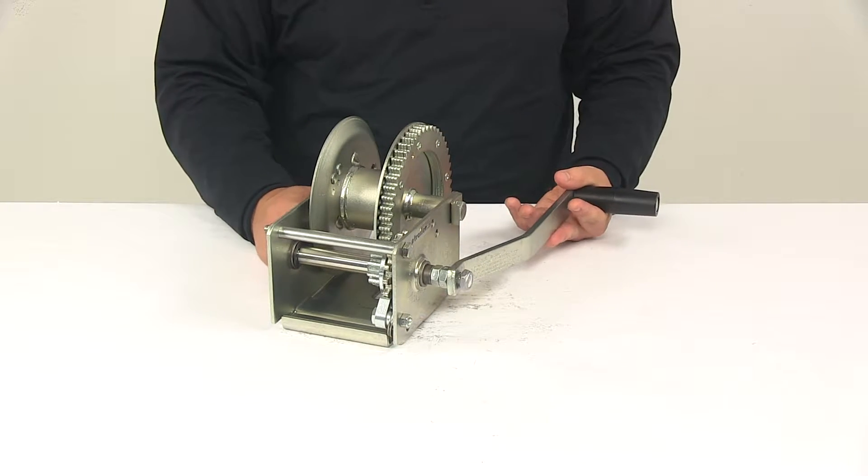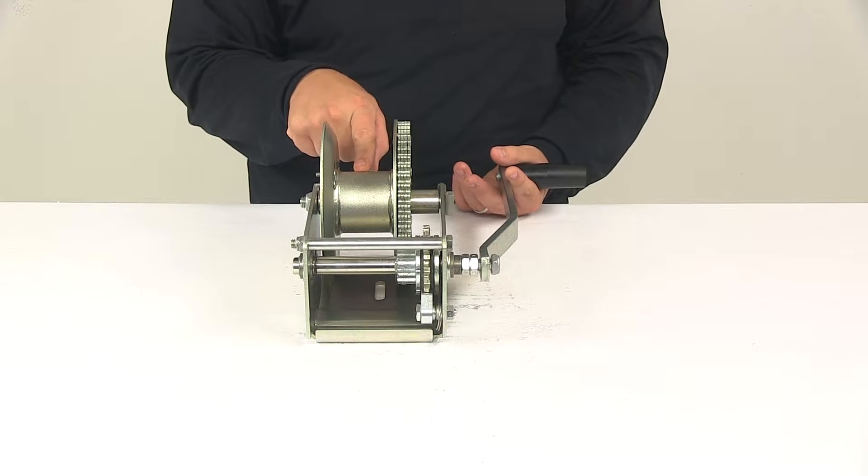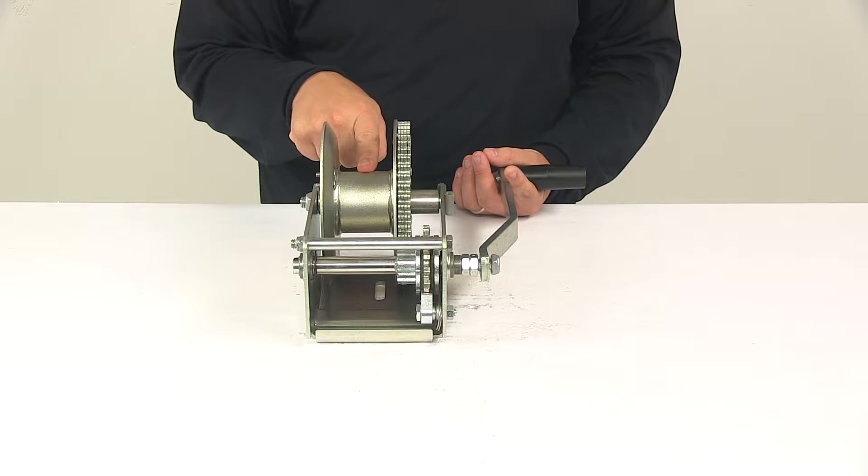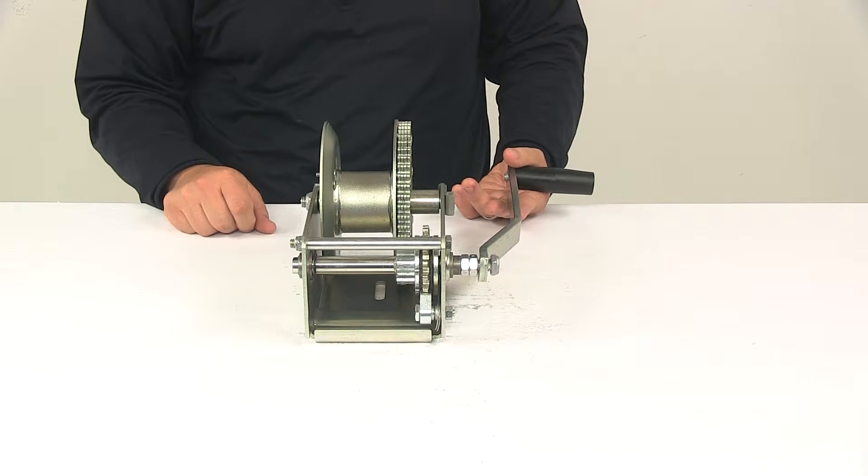The gear ratio on this unit is 5.1 to 1. Drum diameter is 2½ inches. Drum storage is 70 feet. This is for use with cable only with a maximum cable diameter of a quarter of an inch. Cable test strength is 7,000 pounds.